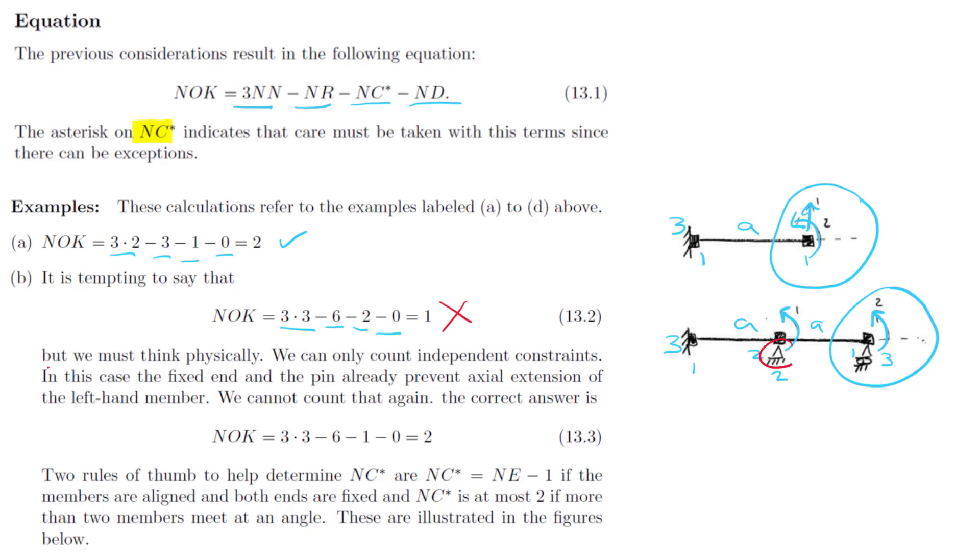And what's happening is this pin right here is already restraining the horizontal movement of that node. So whether or not there's an axial constraint in that member, that node still can't move. So we can't double count a constraint.